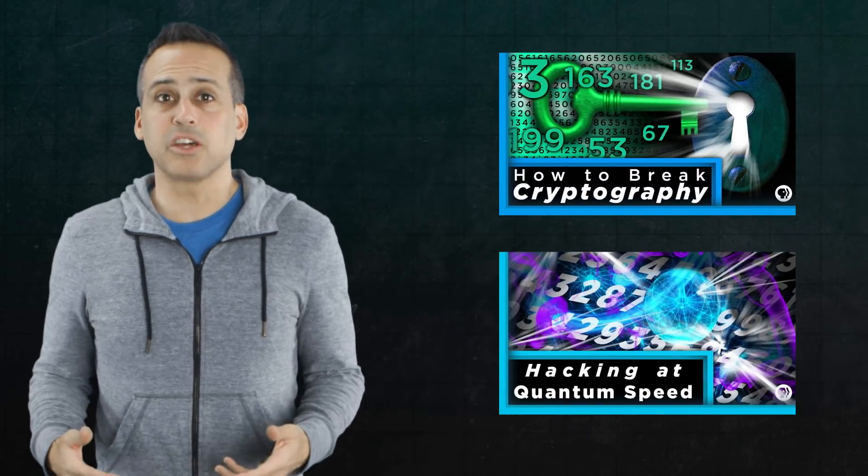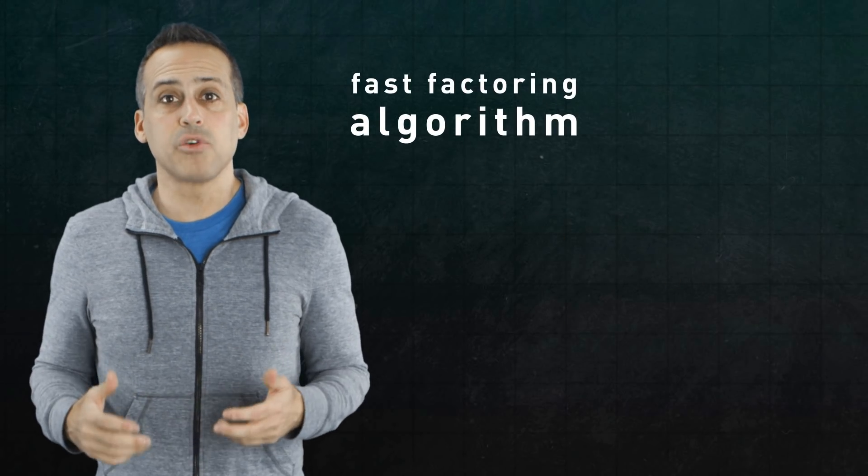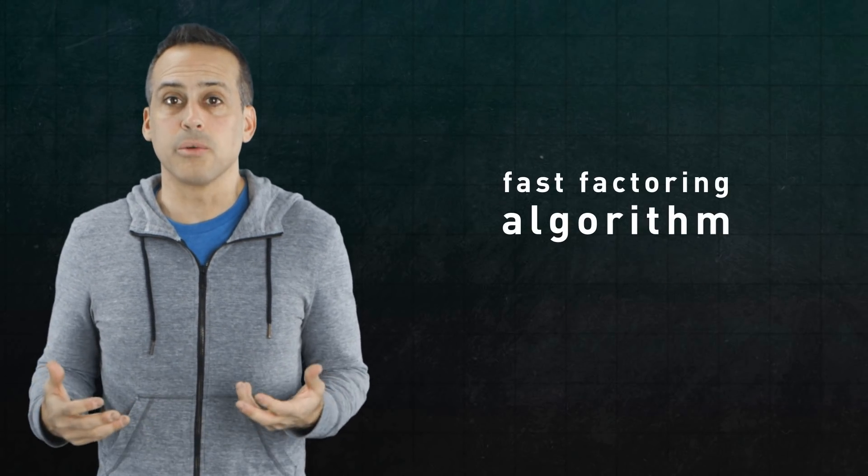In previous episodes, Kelsey explained how you could crack RSA encryption with an algorithm capable of quickly factoring ginormous numbers into primes. Now that might give you the impression that fast factoring algorithms would compromise all digital security, but not so.